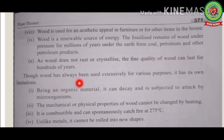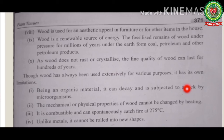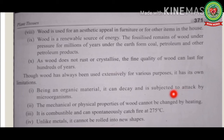Wood has limitations as well. Being an organic material, it can decay and be attacked by microorganisms — this can only be reduced by lowering its moisture content. The mechanical or physical properties of wood cannot be changed by heating; heating causes it to burn and form charcoal. It is combustible and can spontaneously catch fire at 275°C. Unlike metal, it cannot be rolled into new shapes. These limitations restrict its use to certain levels.